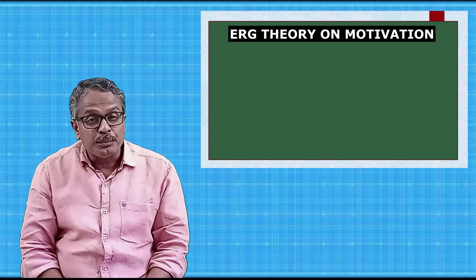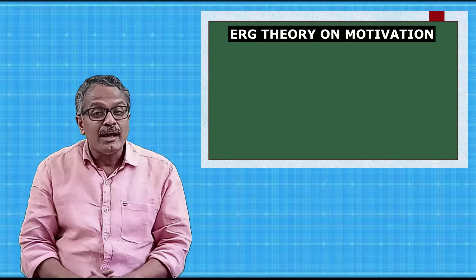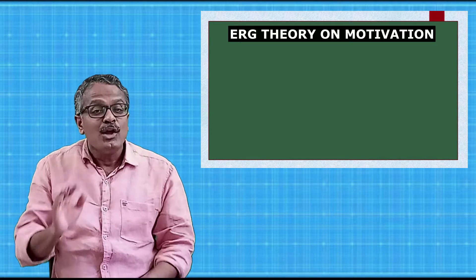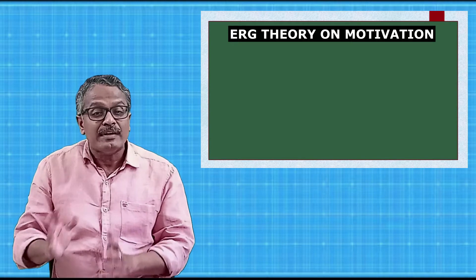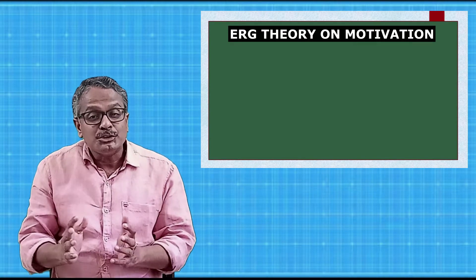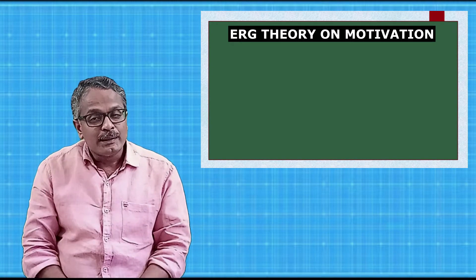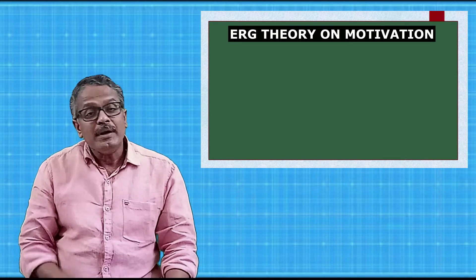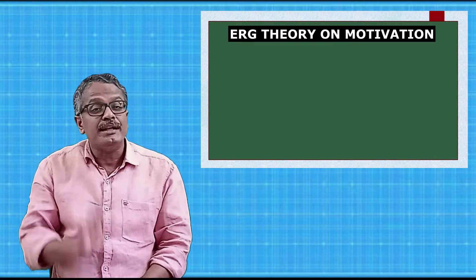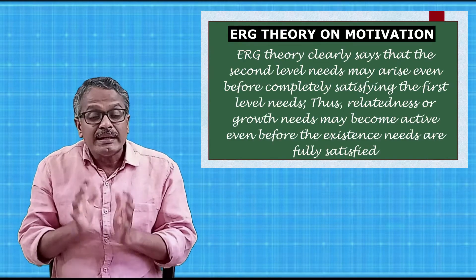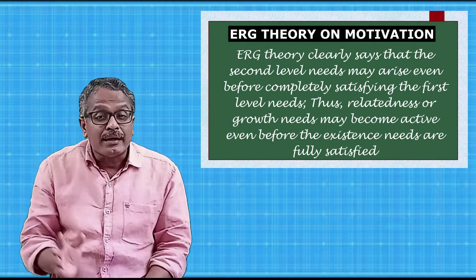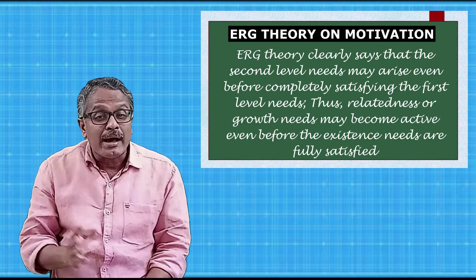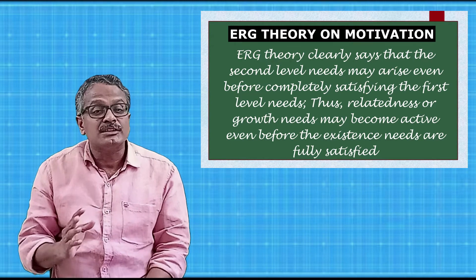However, there are some differences in these two theories. The first difference is in the emergence of needs. Maslow argued that needs get activated one after another — one level of need emerges only after the previous level is satisfied. The first level needs should be satisfied before the emergence of second level needs. But under ERG theory, Alderfer differs with this idea. ERG theory clearly says that second level needs may arise even before completely satisfying the first level needs. Thus, relatedness or growth needs may become active even before the existence needs are fully satisfied.